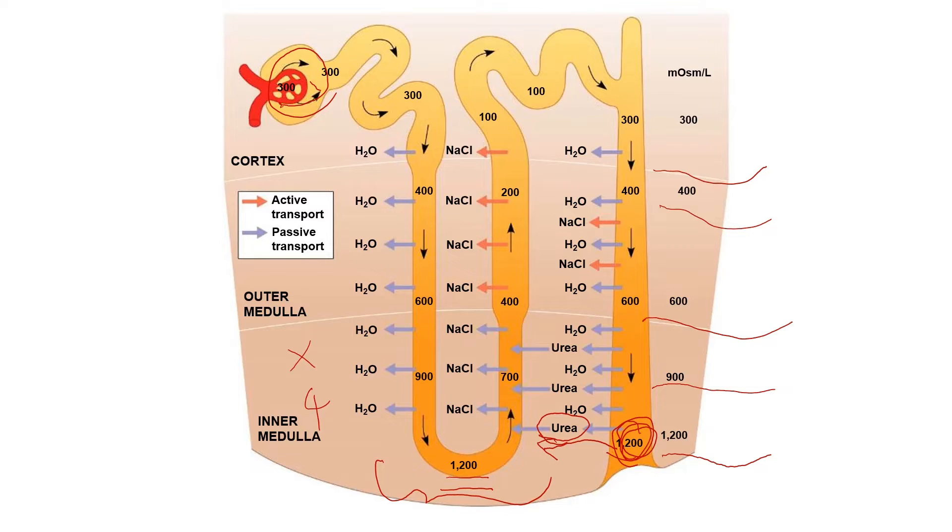The filtrate passing from the Bowman's capsule to the proximal tubule has about the same osmolarity as blood: 300 in the blood and 300 in the filtrate. A large volume of water itself is reabsorbed from the filtrate as it flows through the proximal tubule. As a result, the filtrate volume decreases substantially but its osmolarity remains about the same, 300.